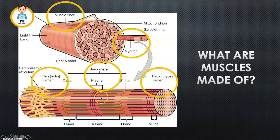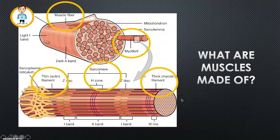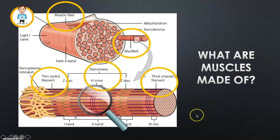Finally, within the sarcomeres, we have thick myosin filaments — these are the purple lines here — and we have thin actin filaments, shown in green in this diagram. So we've had a look at the structure of muscle and what it's made up of. Now we're going to dive a little bit deeper to find out how these work together to create movement.